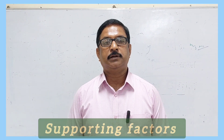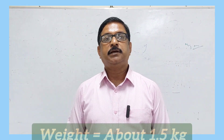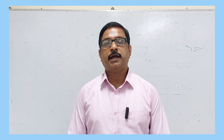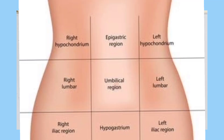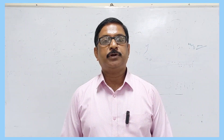The second question that usually comes is: what are the supporting factors of the liver? The liver is an organ which is about 1.5 kg in weight, making it a very large organ. It is situated in the right hypochondrium, epigastrium, and partly in the left hypochondrium. The factors that keep it in position despite its huge weight are called the supporting factors.